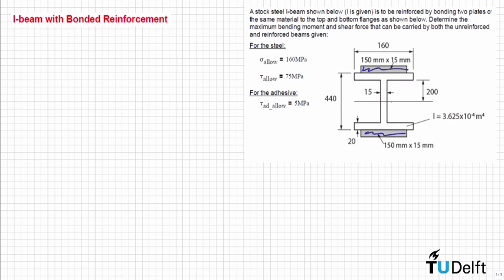We have that the maximum normal stress allowed is equal to 160 MPa, the maximum shear stress is equal to 75 MPa, and in the case of the adhesive that we are going to use to join these parts, the maximum shear stress is equal to 5 MPa.